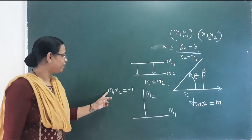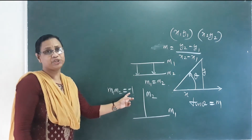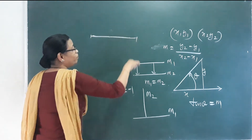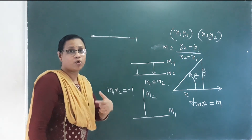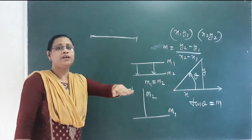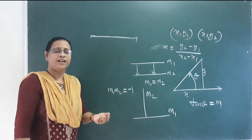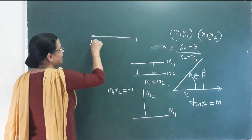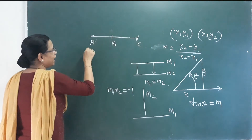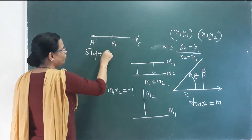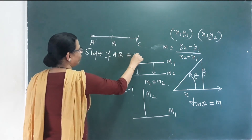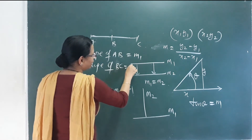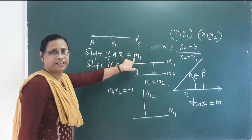For three points, we use slope to test collinearity. For collinear points on a line, we find the slope of AB (call it m1) and the slope of BC (call it m2). If m1 equals m2, the points are collinear.